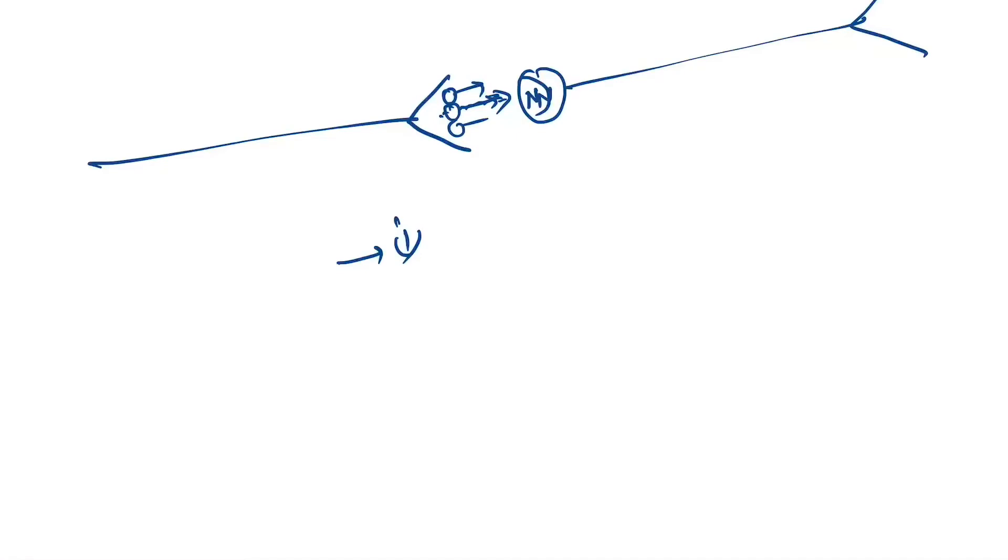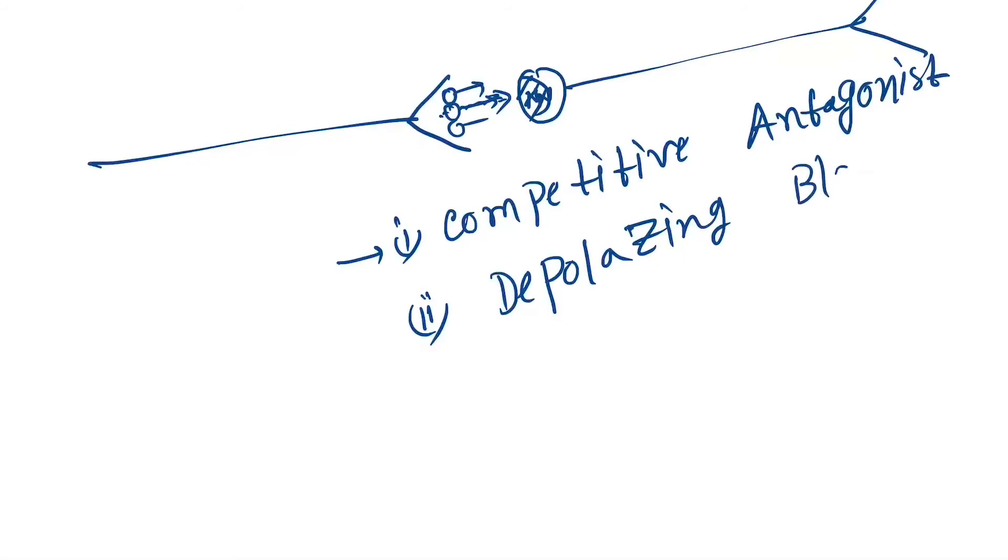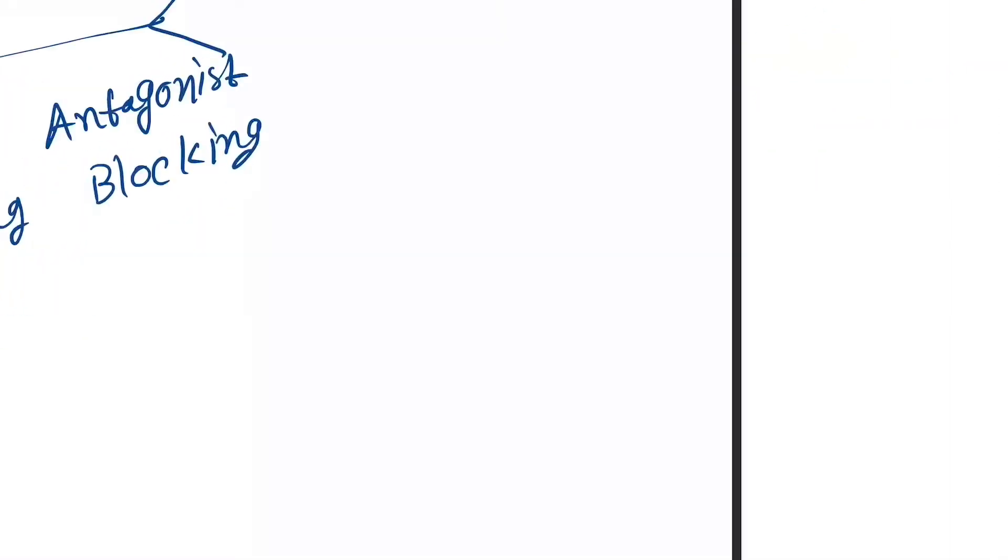receptor - that is competitive antagonist. And the other is the depolarizing blocking agent. These two are the main classifications of ganglionic blocking agents. Now see the